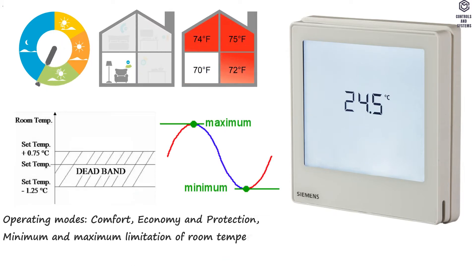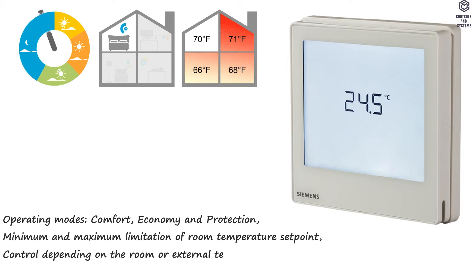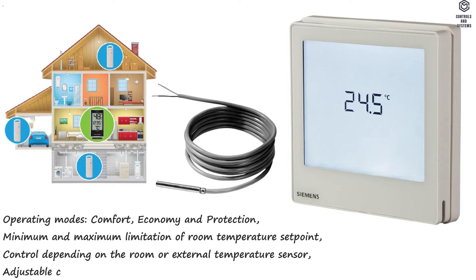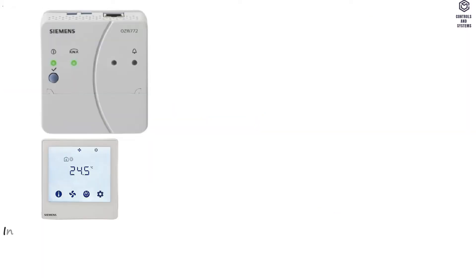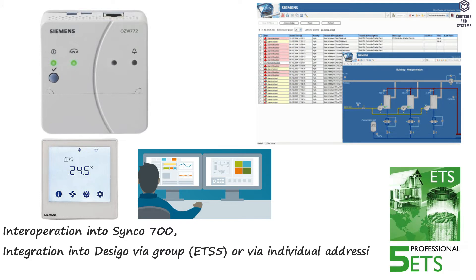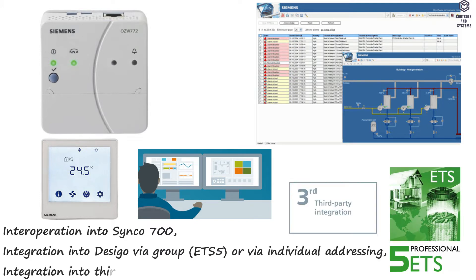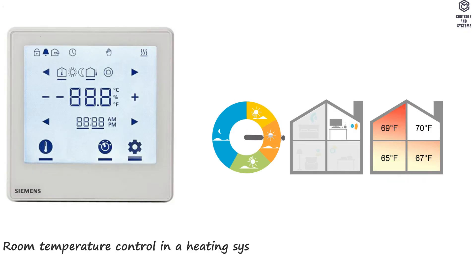Minimum and maximum limitation of room temperature setpoint. Control depending on the room or external temperature sensor. Adjustable commissioning and control parameters. Interoperation into Synco 700, integration into Desigo via group addressing ETS 5 or via individual addressing, and integration into third-party systems via group addressing ETS 5.